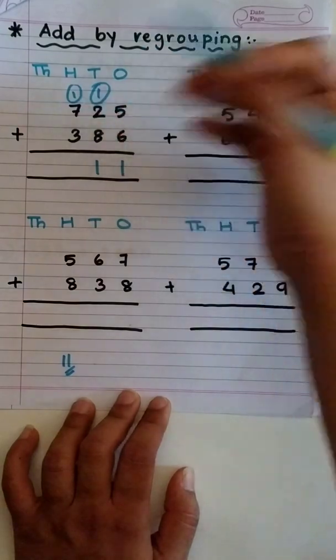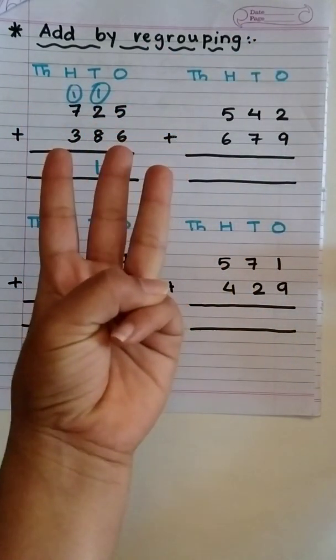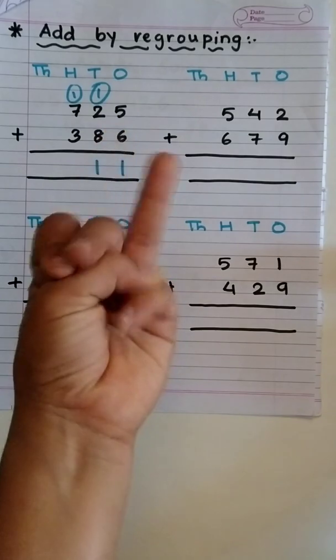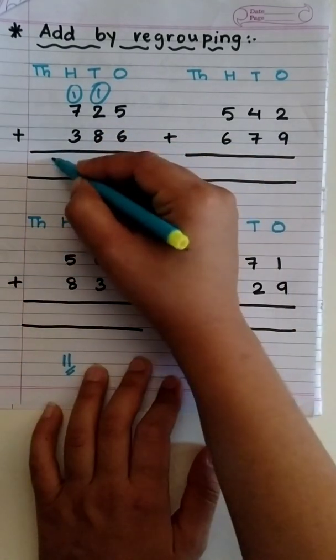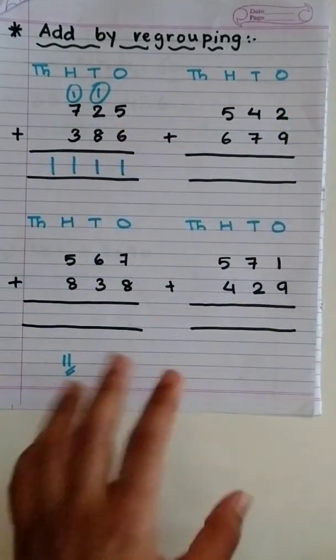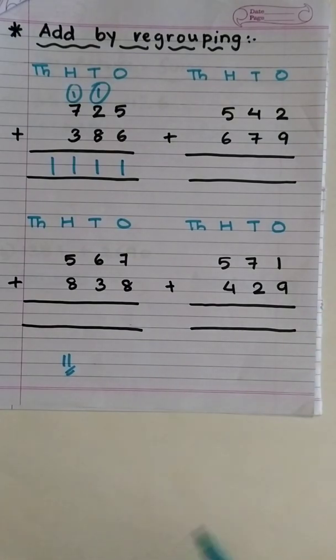Now, 7 plus 1 is 8. And, 8 plus 3, 9, 10, 11. Wasn't this easy for you? Let's try one more.